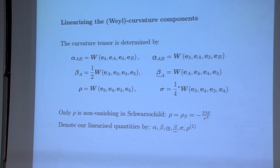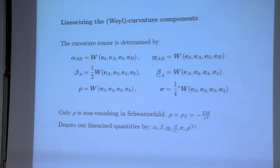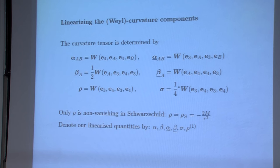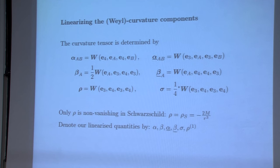Then you do the same for the curvature: decompose it with respect to the null frame, giving null curvature components alpha, alpha-bar, beta, beta-bar, rho, and sigma. If you compute these for epsilon equals zero, the only non-vanishing background value is rho, which equals minus 2m over r cubed — the Schwarzschild value. The linearized quantities are denoted by non-bolded letters; only rho gets a superscript 1, since the background values of the others vanish.